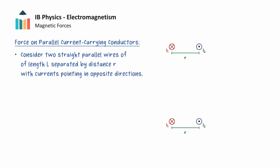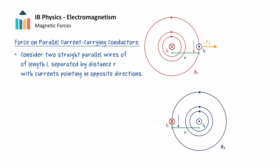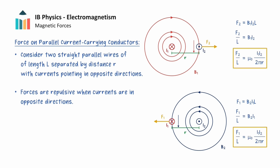Now suppose that the current direction in wire 2 is reversed so that it points out of the screen, while everything else is kept the same. From the right-hand slap rule, we now find that the magnetic force on wire 2 points away from wire 1. Considering the magnetic field from wire 2, we also see that the magnetic force on wire 1 points away from wire 2. So the resulting forces act away from each other and push the wires apart when the currents are in opposite directions. Only the direction has changed, so the magnitude of each force and the force per unit length remain the same.